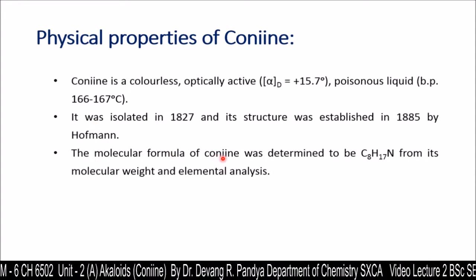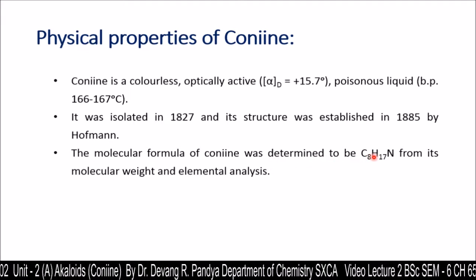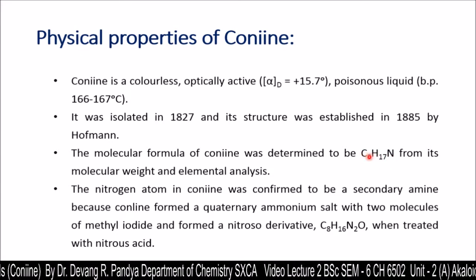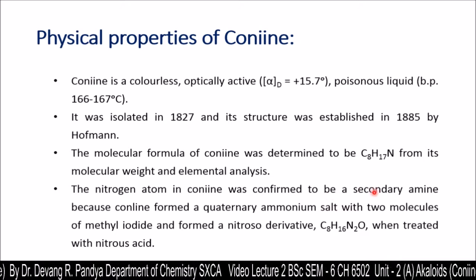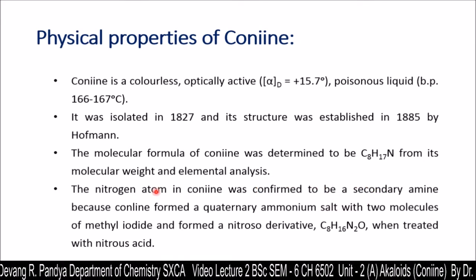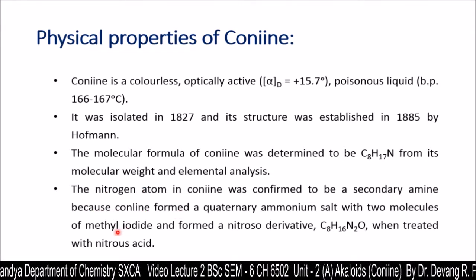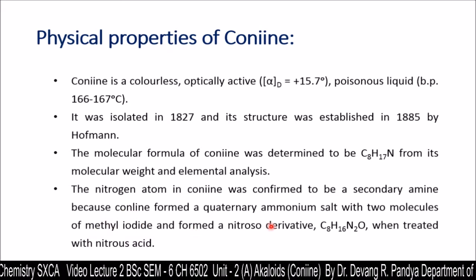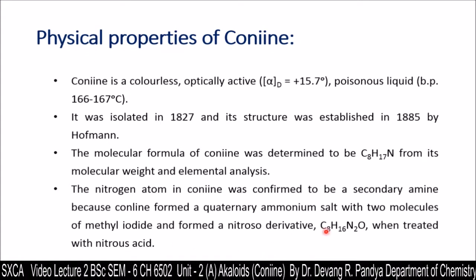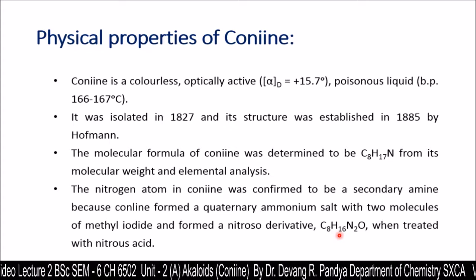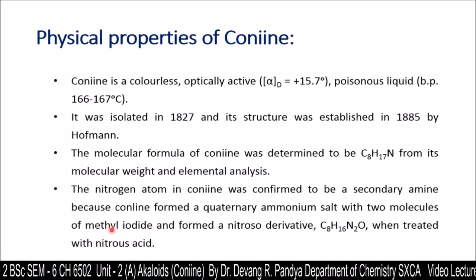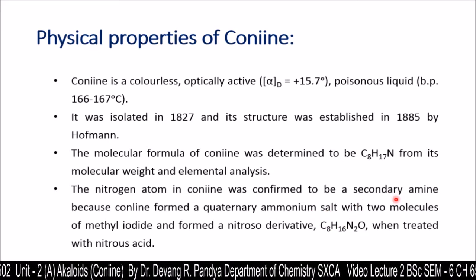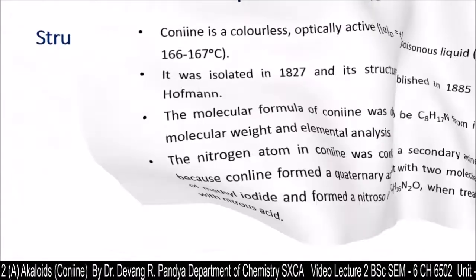The molecular formula of conine was determined to be C8H17N from its molecular mass and elemental analysis. The nitrogen present in conine was confirmed to be a secondary amine. To confirm this, conine is treated with methyl iodide, which forms a quaternary ammonium salt with 2 moles of methyl iodide, and forms a nitroso derivative when treated with nitrous acid. That nitroso derivative has the molecular formula C8H16N2O. These two proofs indicate that this compound contains a secondary amine nitrogen.